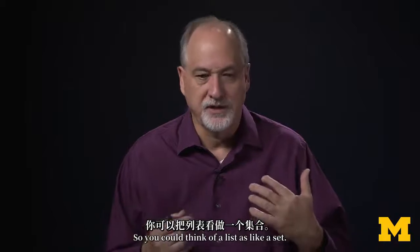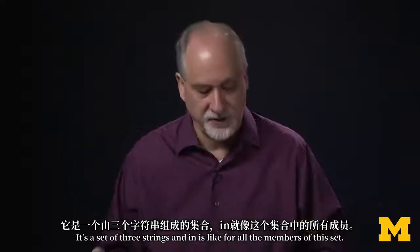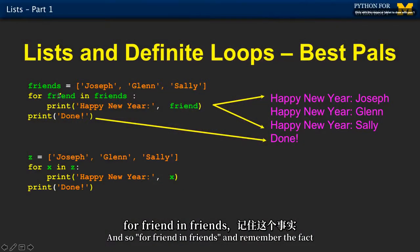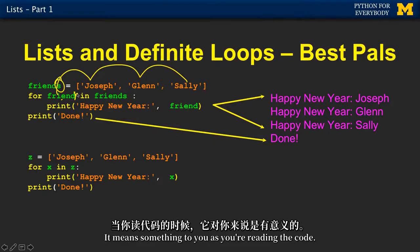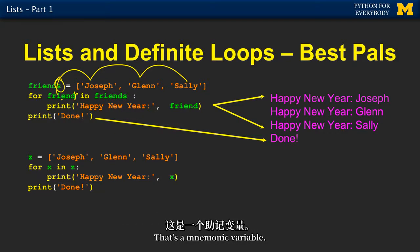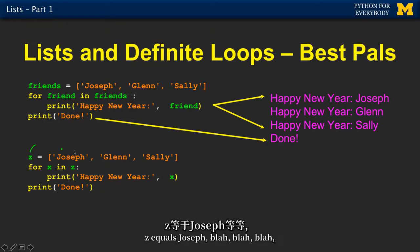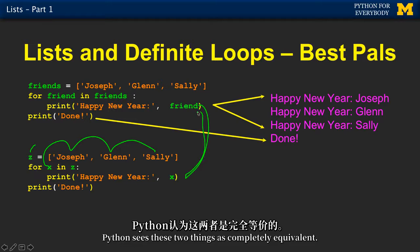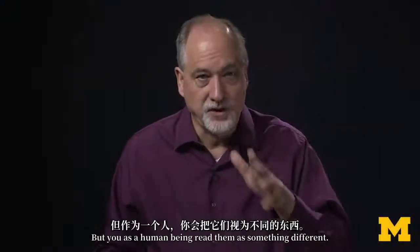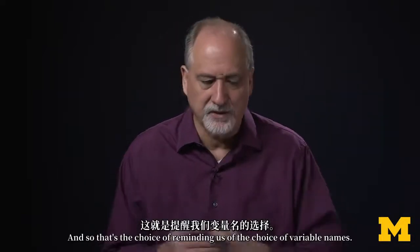You can think of a list as like a set — it's a set of three strings, and 'in' is like 'for all the members of this set.' So 'for friend in friends' — remember, the fact that I use plural here and singular here does not mean anything to Python; it means something to you as you're reading the code. That's a mnemonic variable. Python sees 'for x in z' as completely equivalent, but you as a human read them as something different.